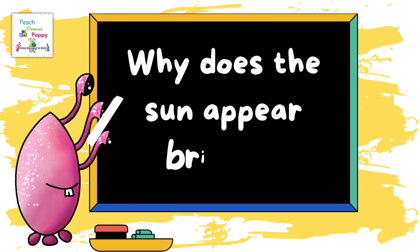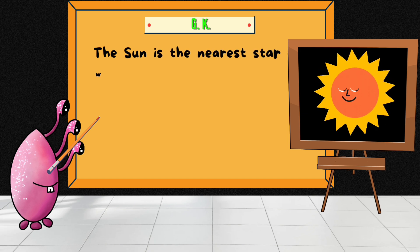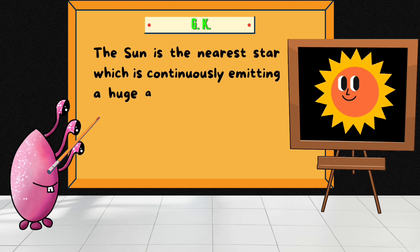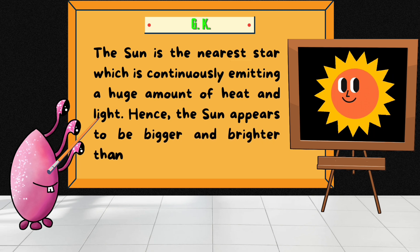Why does the sun appear bright? The sun is the nearest star which is continuously emitting a huge amount of heat and light. Hence the sun appears to be bigger and brighter than all other planets.